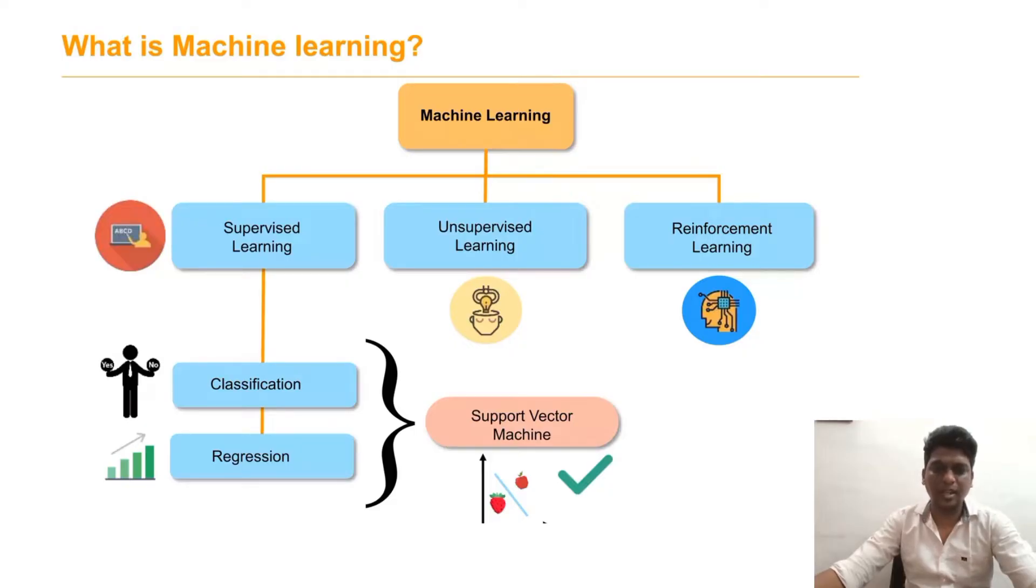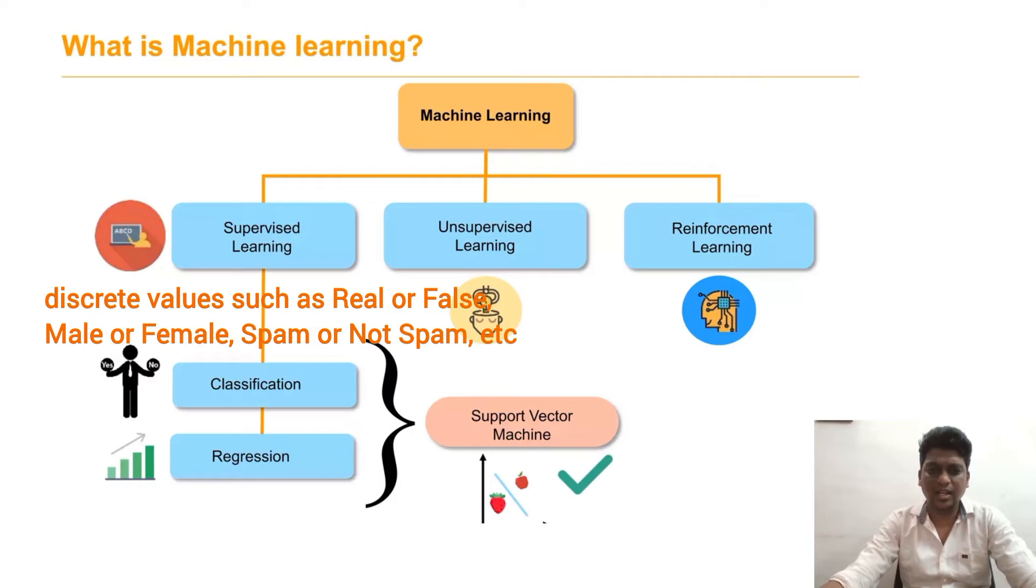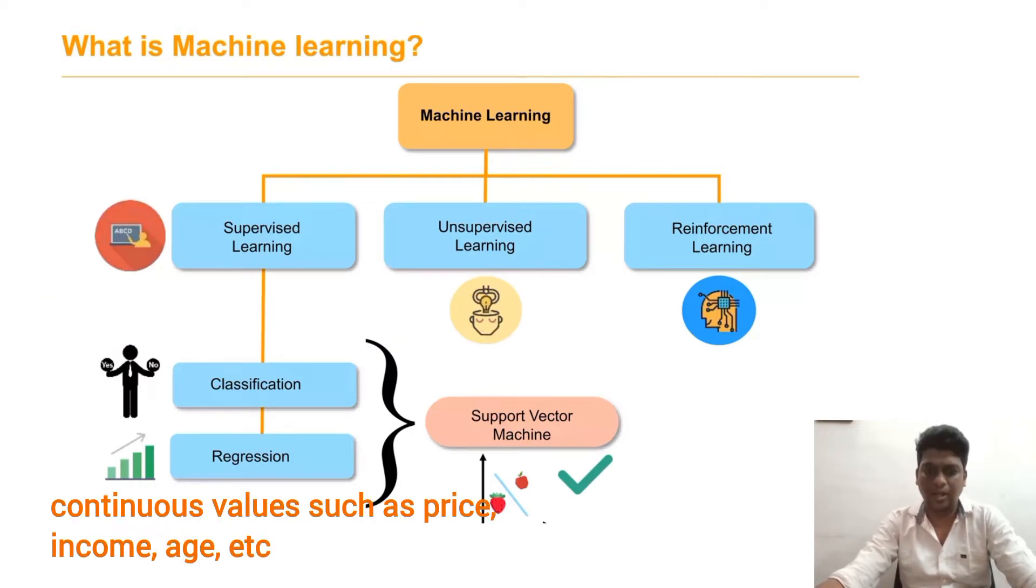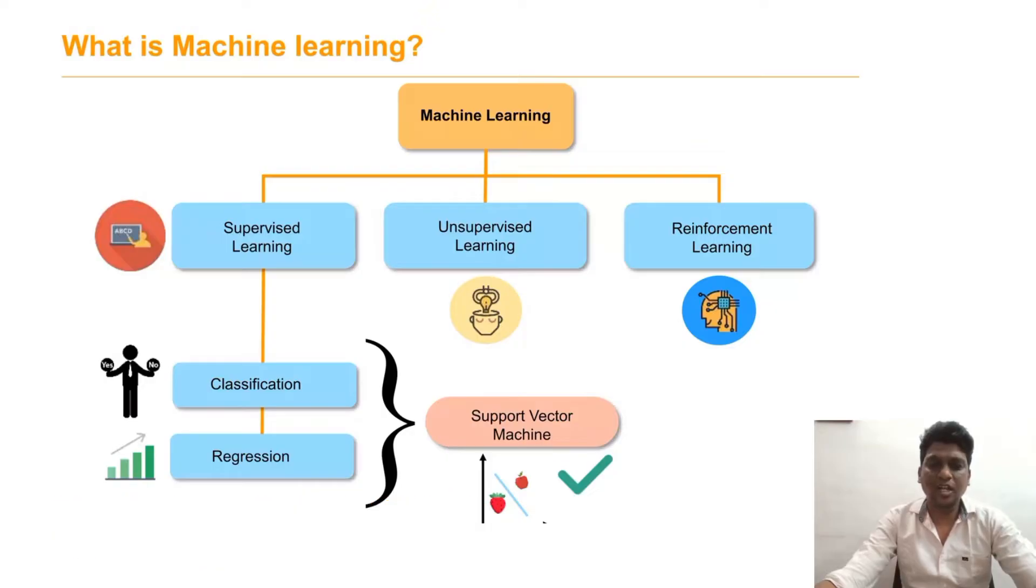SVM is a supervised machine learning method. Supervised is classified into two types: classification and regression. Classification is a discrete type value and regression is a continuous type value. Support vector machine comes under this category.